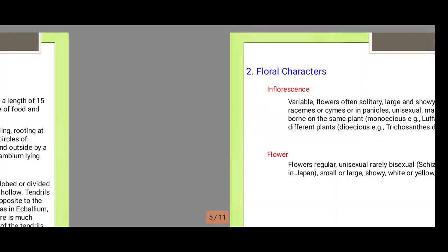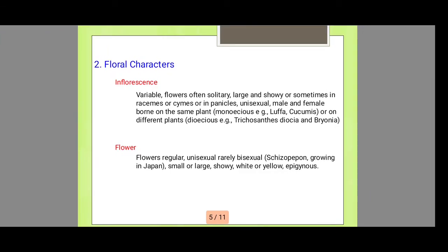Next are the floral characteristics. Inflorescence is cymose. Here, inflorescence is variable. Flowers are often solitary, large and showy, or sometimes in racemes, cymes, or panicles, unisexual, with male and female flowers borne on the same plant.